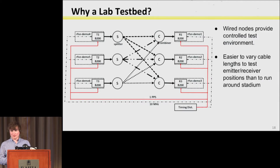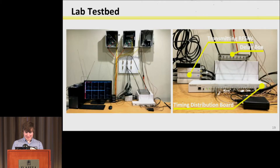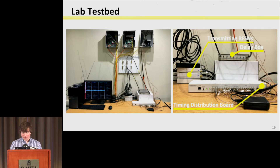A lab test bed is important because it really sucks to reposition things when you can't move receivers without a drill and a day or two, plus athletics approval to cut more holes in the stadium. Plus it doesn't rain inside, so we can test new algorithms there. The lab setup has three boxes — basically the same hardware as in the stadium — along with an Ettus timing distribution board syncing them all up and a delay box for testing different geometries.